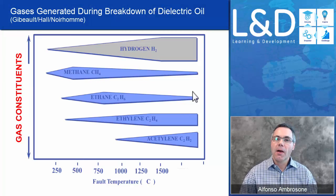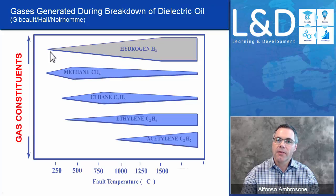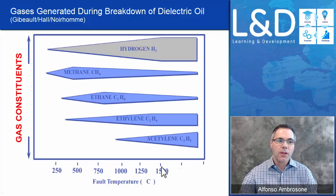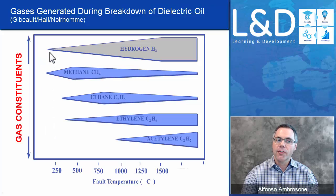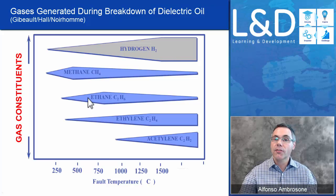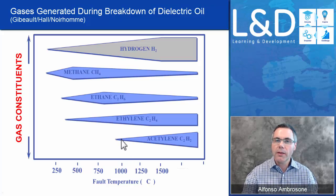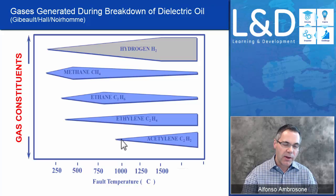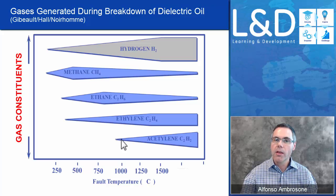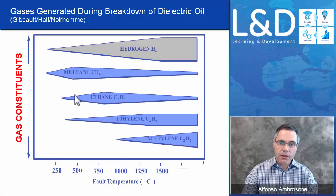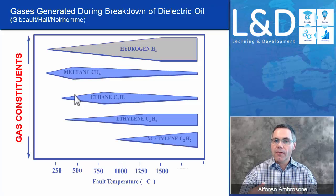This chart shows how that occurs. Hydrogen is a gas that develops at very low temperatures. The x-axis represents the temperature of the fault within the main tank. At very low temperatures, hydrogen is produced, and as the temperature of the fault increases, hydrogen increases. The development of other gases also starts to appear. Acetylene only starts to appear in the oil at high temperatures — around 1,000 degrees — which is usually caused by arcing. So when you have arcing, you will have acetylene. Depending on the type and concentration of gases generated, you can start to understand what kind of breakdown is occurring in the main tank.